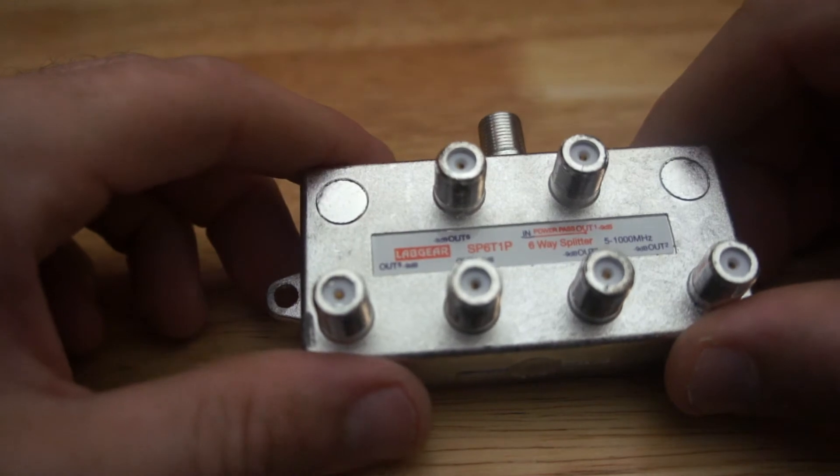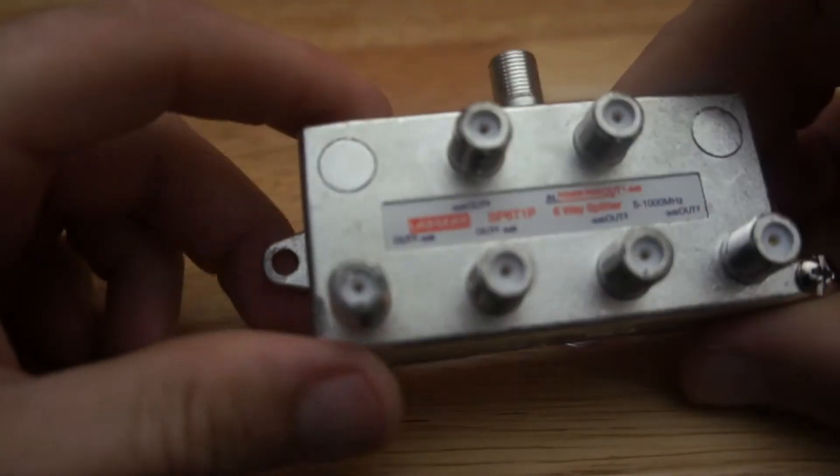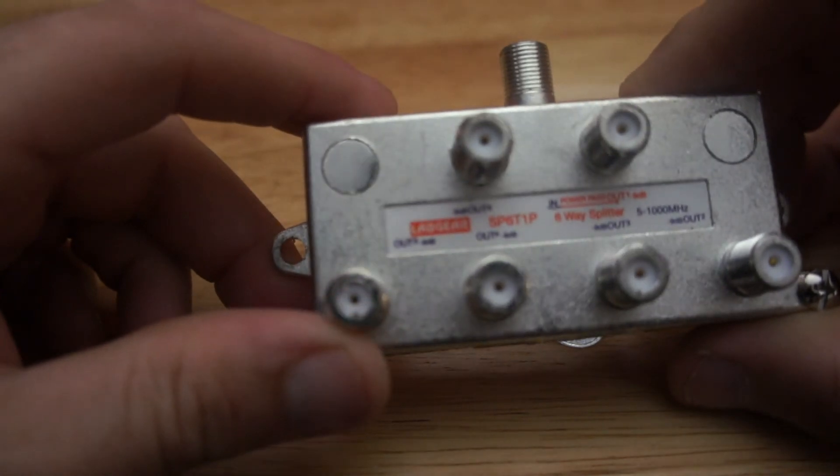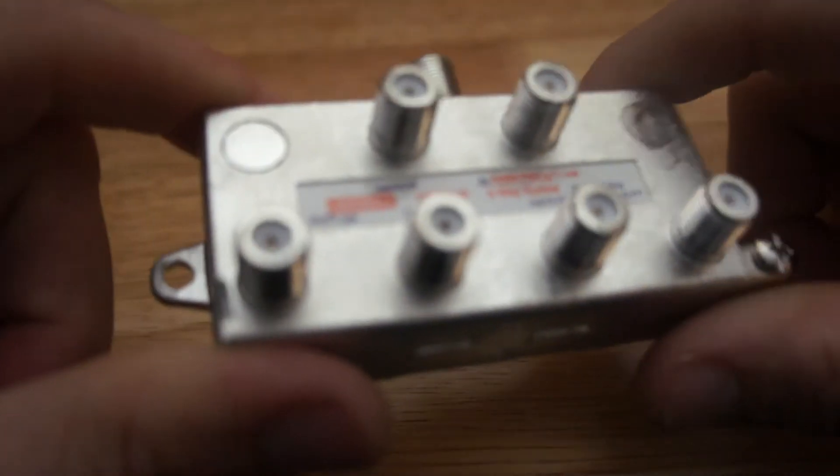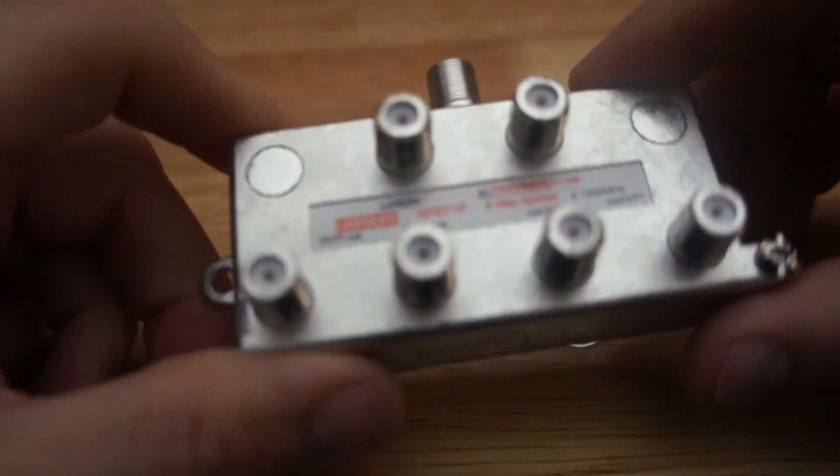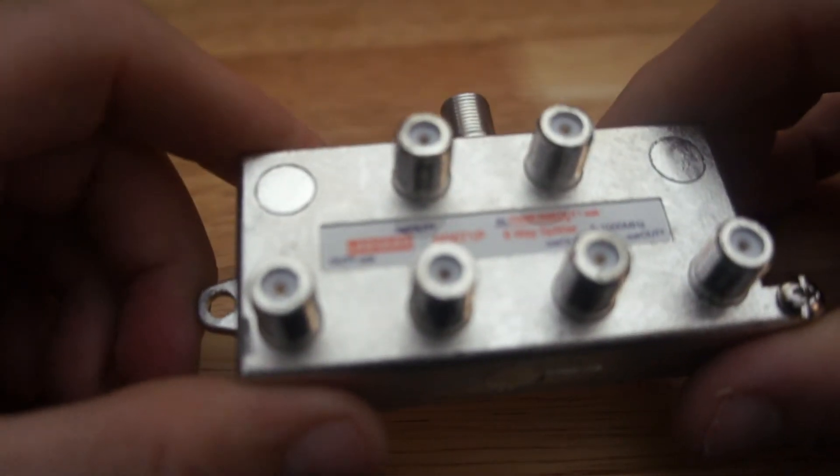General rule of thumb, how much loss do you get from a splitter? A rule of thumb that I've always gone by the size of the splitter plus two. So that means if this is a six-way splitter, I would expect to lose six to eight dB.